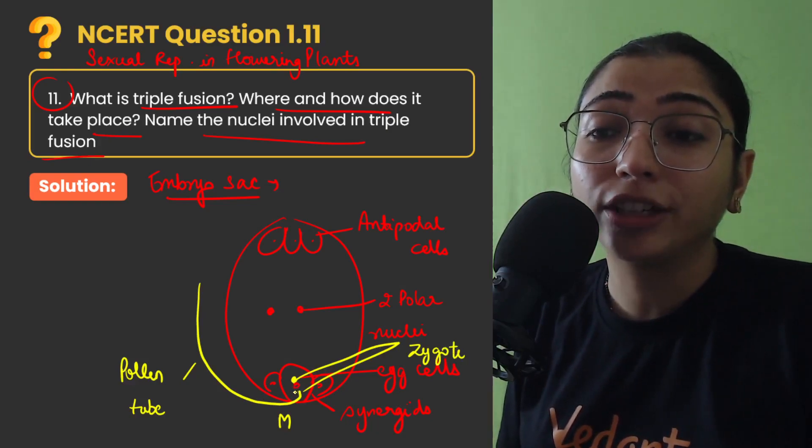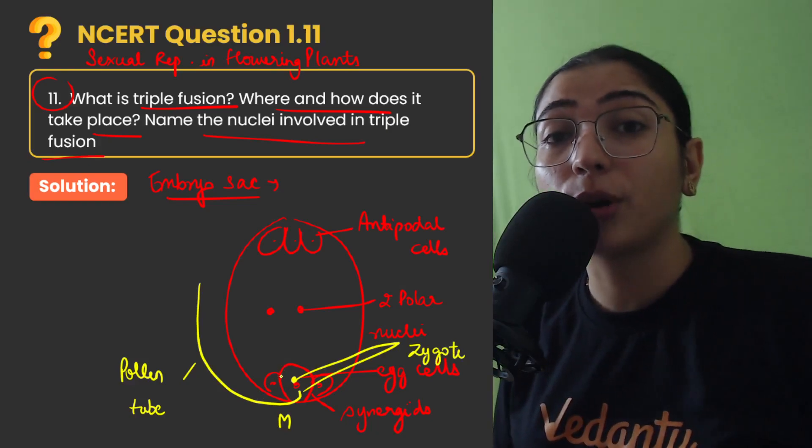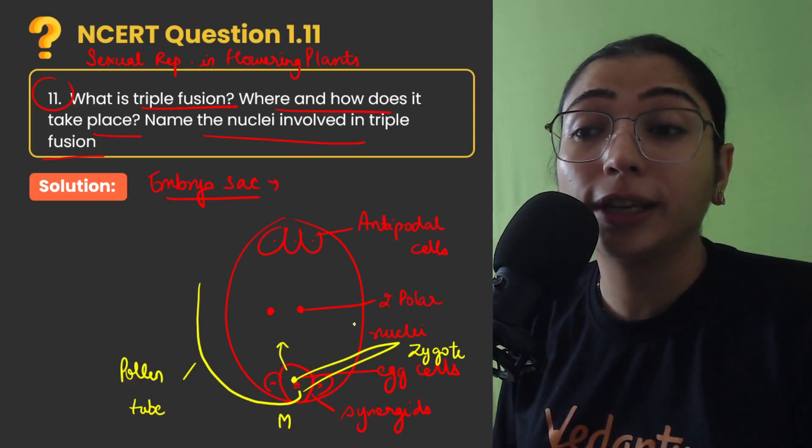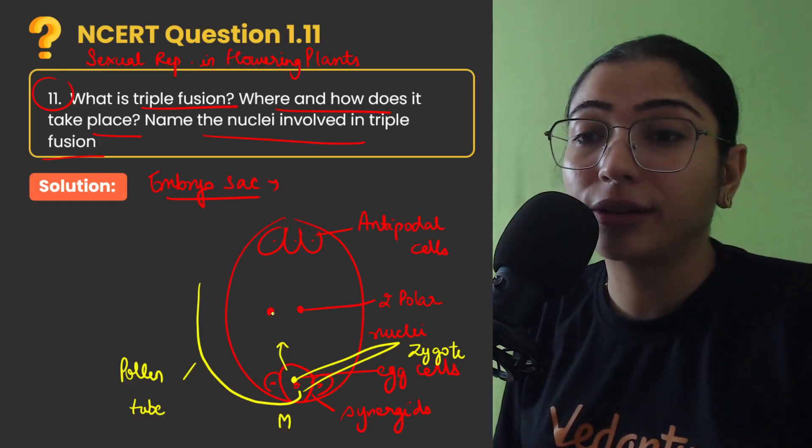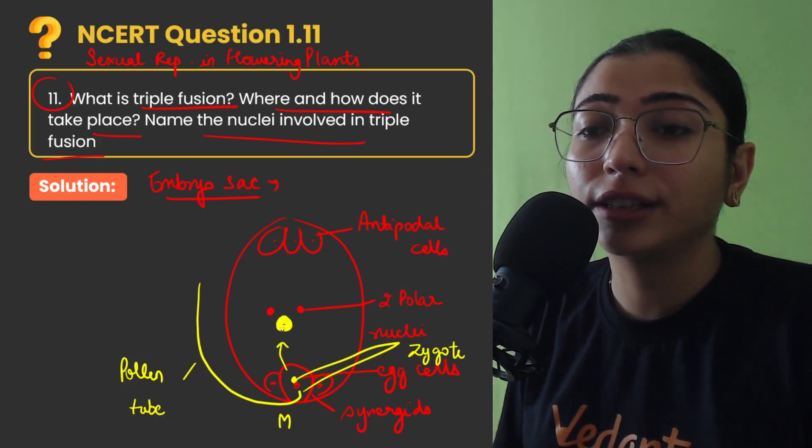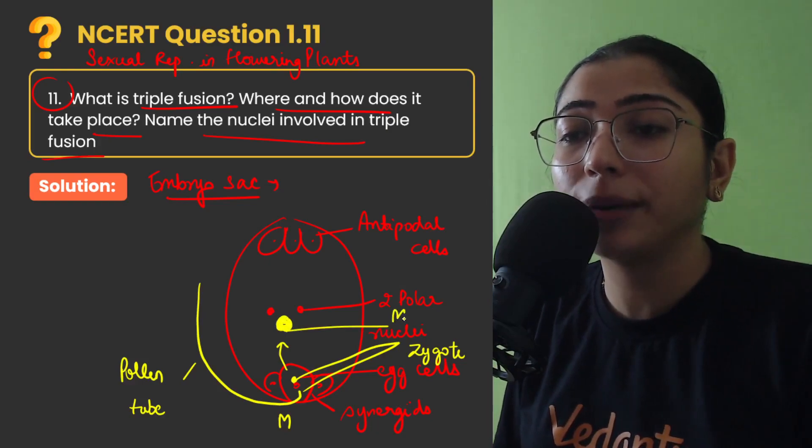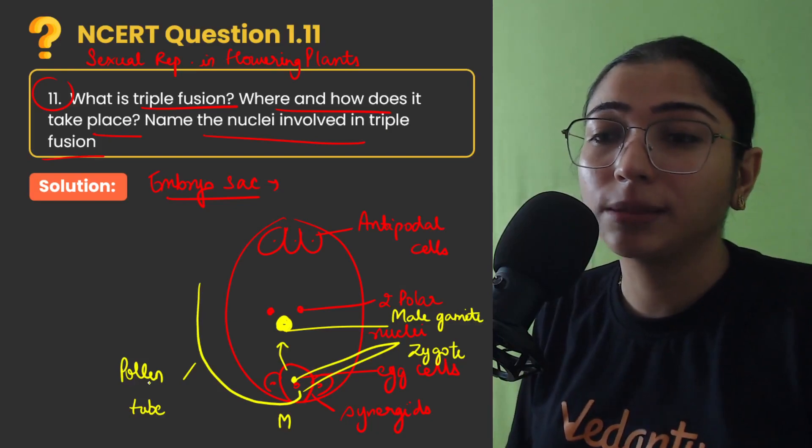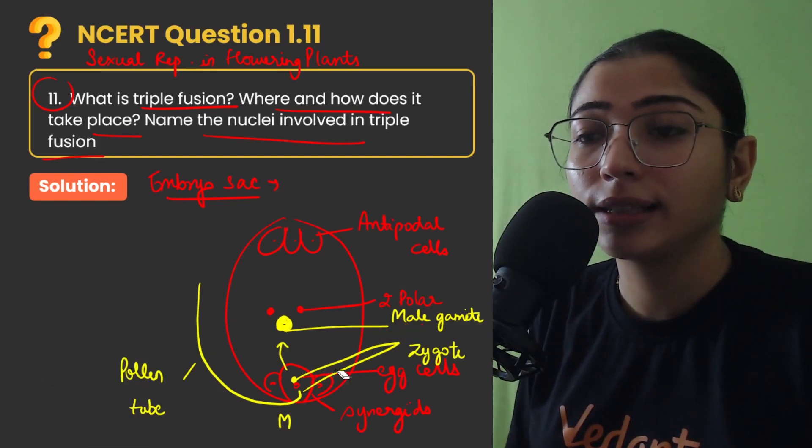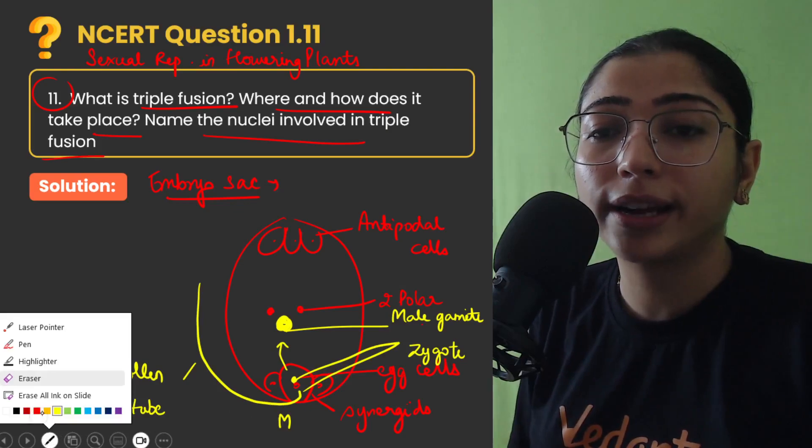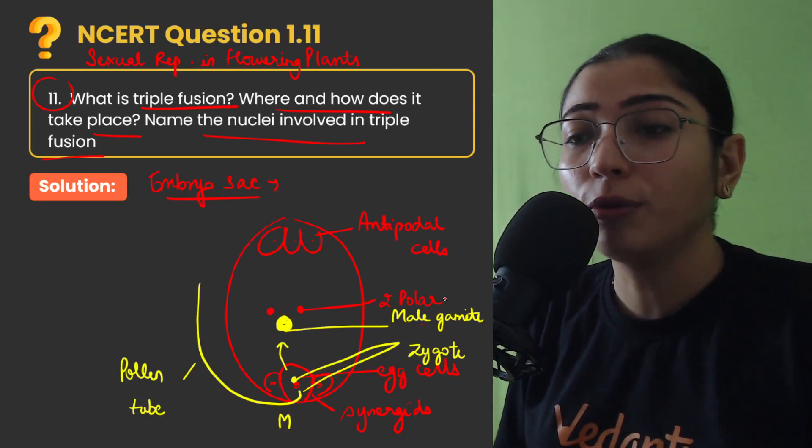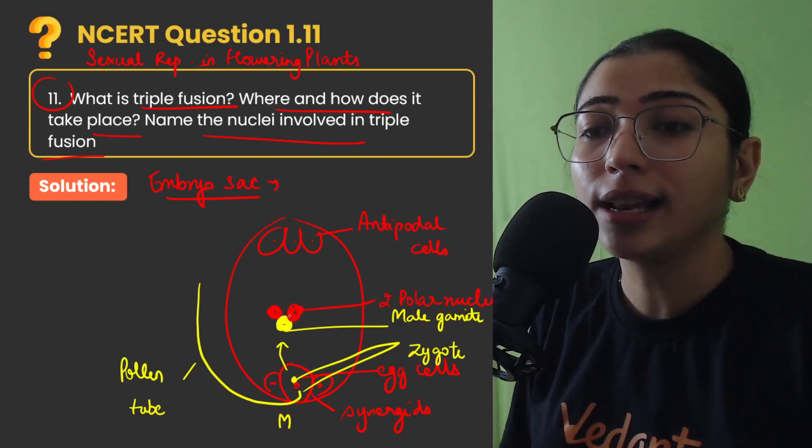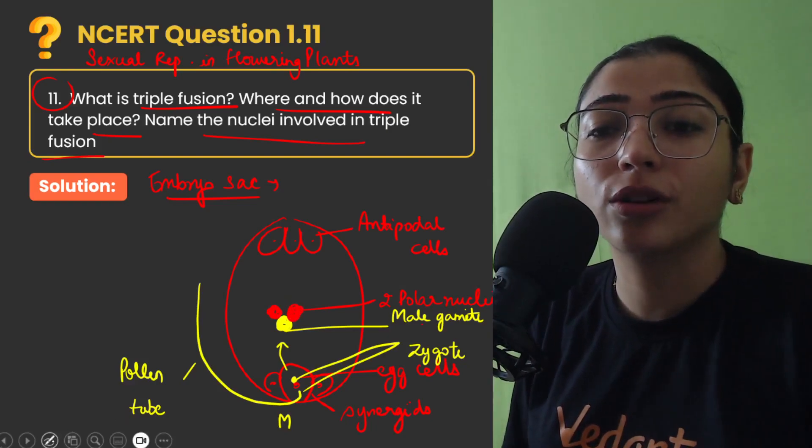Then this second male gamete, you know pollen tube is bringing 2 male gametes. Further it will release the male gamete into the cytoplasm of the central cell where the 3 nuclei, this is the male gamete and the 2 polar nuclei fuse together. So this is male gamete and you can clearly see these were 2 polar nuclei.